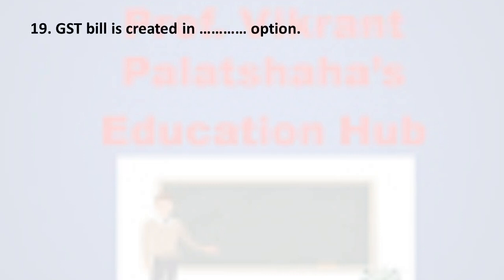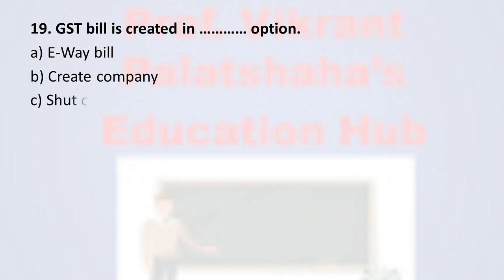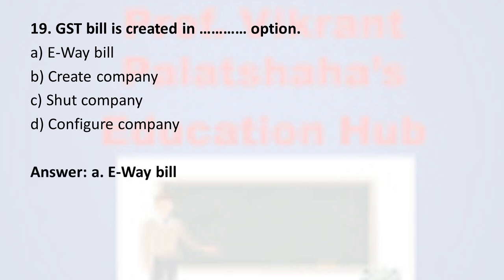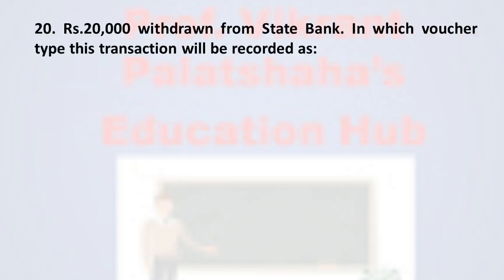Question number nineteen: GST bill is created in — Option A: E-Way Bill, Option B: Create a Company, Option C: Shut Company, Option D: Configure Company. The correct option is Option A, E-Way Bill. In Tally, the GST bill is created under the E-Way Bill option, therefore the correct option is Option A.